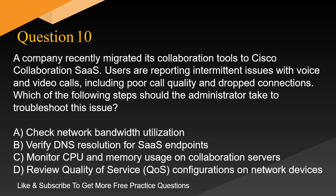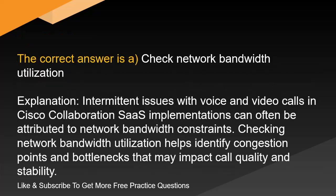Question 10. A company recently migrated its collaboration tools to Cisco Collaboration SaaS. Users are reporting intermittent issues with voice and video calls, including poor call quality and dropped connections. Which of the following steps should the administrator take to troubleshoot this issue? A. Check network bandwidth utilization. B. Verify DNS resolution for SaaS endpoints. C. Monitor CPU and memory usage on collaboration servers. D. Review quality of service (QoS) configurations on network devices. The correct answer is A. Check network bandwidth utilization. Intermittent issues with voice and video calls in Cisco Collaboration SaaS implementations can often be attributed to network bandwidth constraints. Checking network bandwidth utilization helps identify congestion points and bottlenecks that may impact call quality and stability.